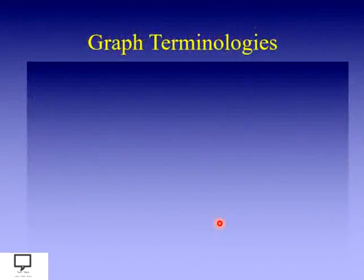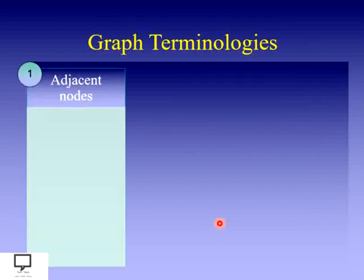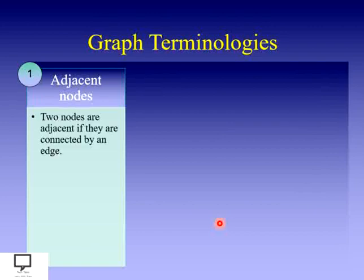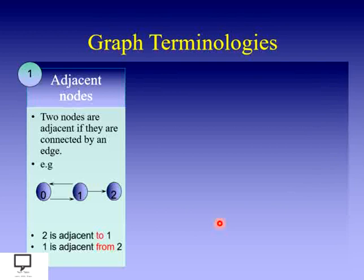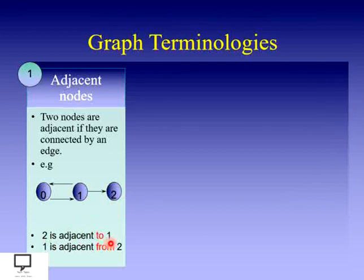Before moving to the representation, you must know a few terminologies of graph. The first terminology is adjacent nodes. Adjacent nodes are those two nodes that are connected with an edge. Here you can see that 0 and 1 are adjacent nodes, and 1 and 2 are also adjacent nodes because they are connected with each other. The terminology used to represent adjacent nodes: if 1 and 2 are connected, it is called '2 is adjacent to 1,' and from the perspective of vertex 1, it is called '1 is adjacent from 2.'